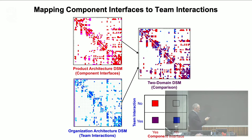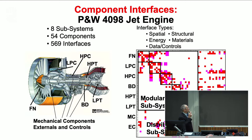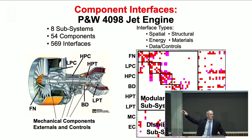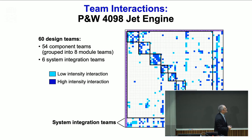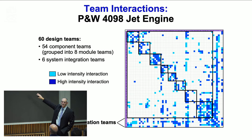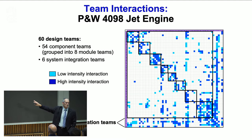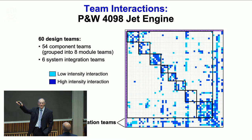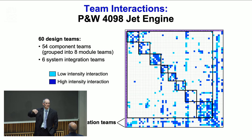You probably recognize the red matrix — it's the one from Pratt and Whitney. There are 54 components and 54 component teams. But it turns out there are actually 60 teams — six more. Those six additional teams have no component responsibility; they're what Pratt and Whitney calls system integration teams, whose job is delivering performance — the thrust team, the noise abatement team, the fuel efficiency team — the six high-level things that Pratt and Whitney gets paid by their customers for. Let's look at just the 54-by-54 component portion of this matrix and compare it to the red one.